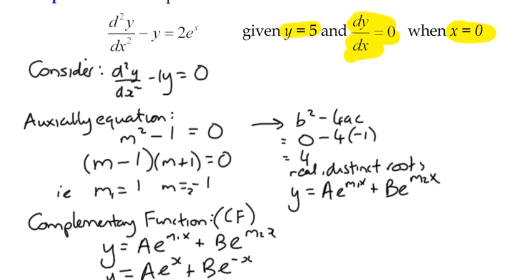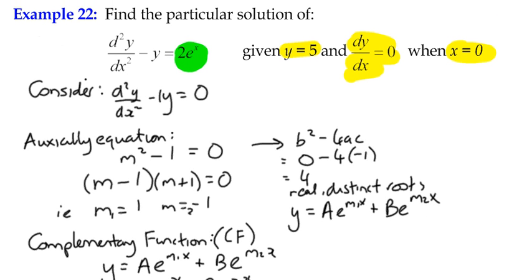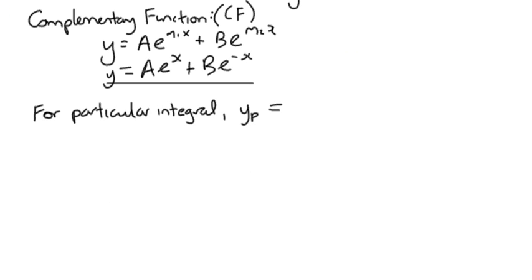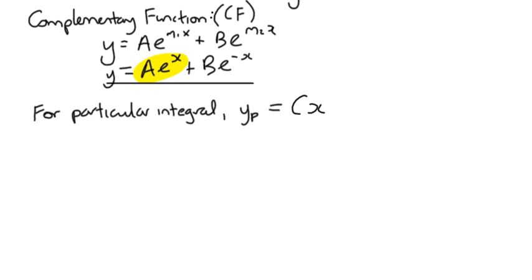Because the right-hand side is exponential — 2e^x — we would normally try a particular integral of the form Ce^x, mirroring the power. The problem is that Ce^x is the same type as Ae^x in the complementary function, so we haven't created a unique solution. To fix this and make a unique solution, we introduce a multiplier of x, giving us Cxe^x as our particular integral.